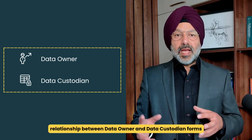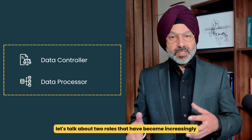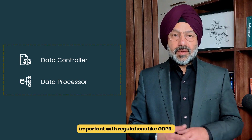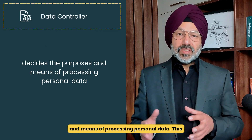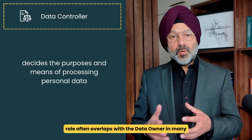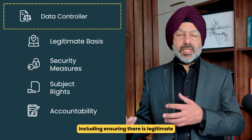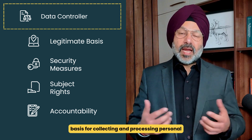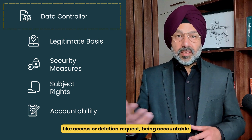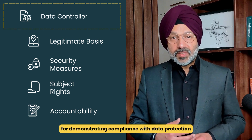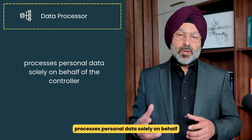This relationship between data owner and data custodian forms the backbone of organizational data governance. Now let's talk about two roles that have become increasingly important with regulations like GDPR: the data controller and data processor. The data controller decides the purpose and means of processing personal data — this role often overlaps with the data owner in many organizations. Controllers have significant legal responsibilities, including ensuring there is a legitimate basis for collecting and processing personal data, implementing appropriate security measures, and honoring data subject rights like access or deletion requests.